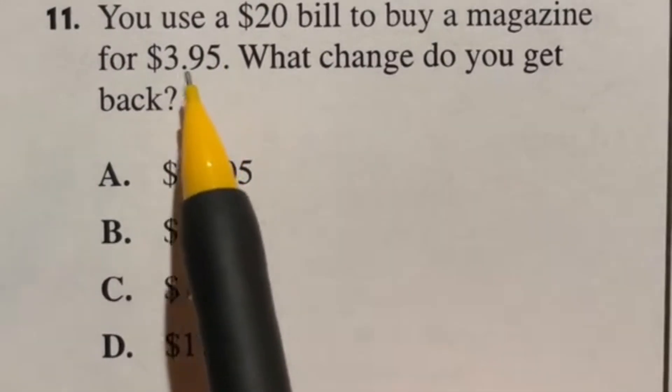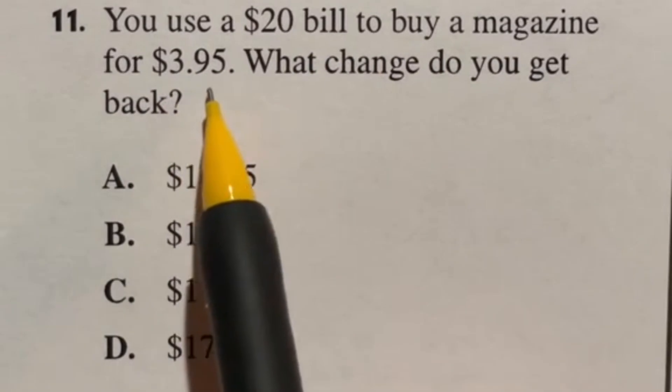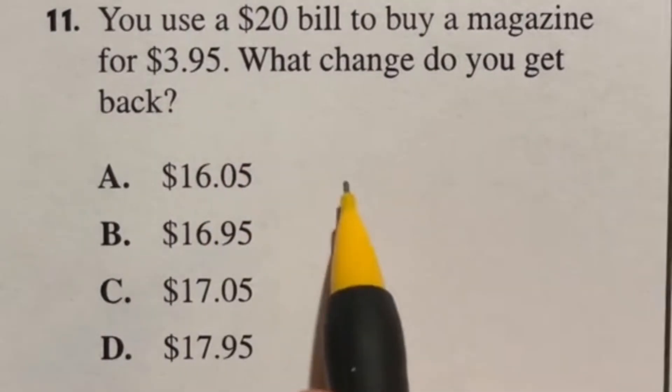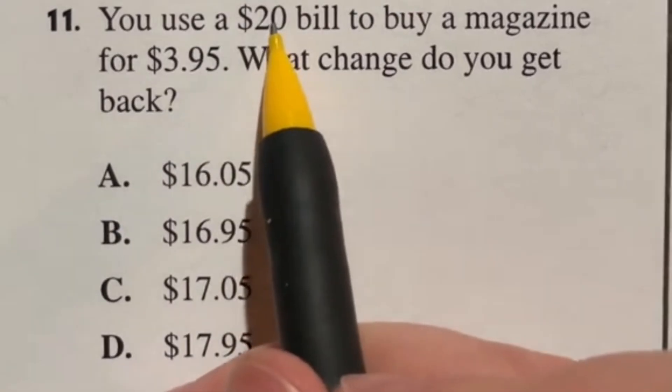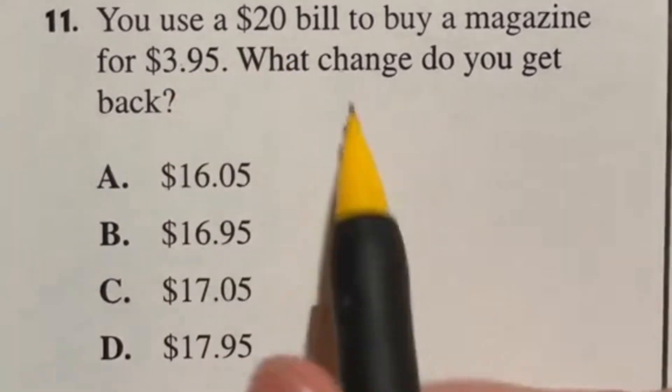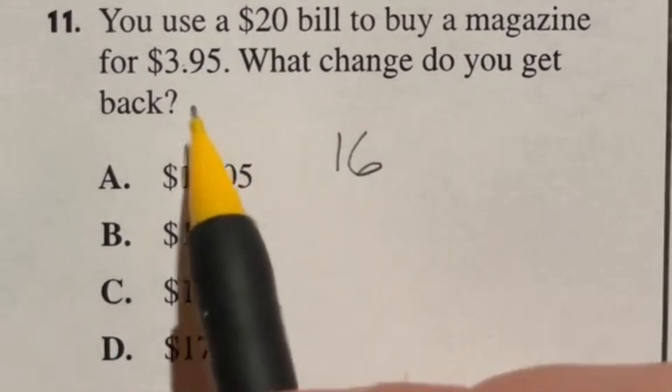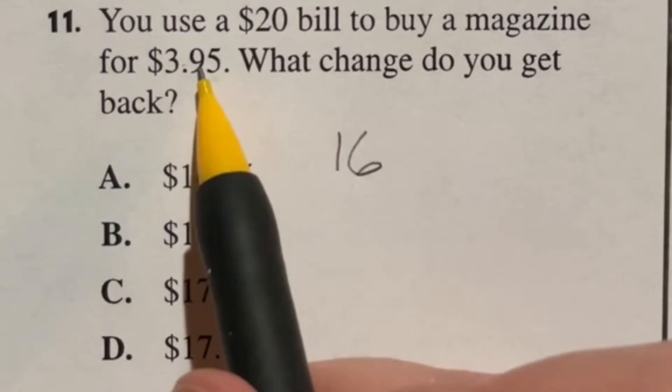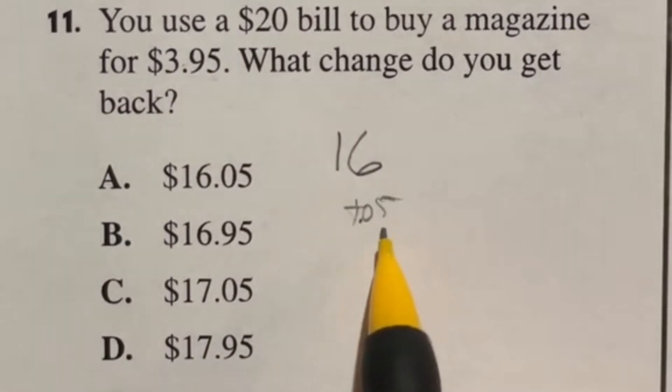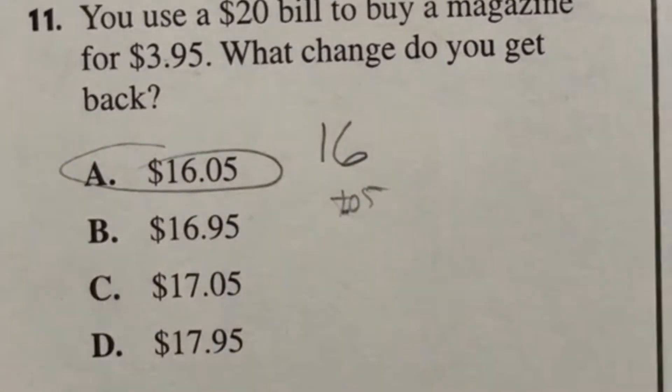This is a quick question. You shouldn't spend more than a few seconds on it. You use a $20 bill to buy a magazine for $3.95. What change do you get back? We're just doing 20 minus that $3.95. Well, that's five cents off of $4. So 20 minus $4 would give me 16 back. But remember, it was not $4, it was $3.95. So that means we still have that extra five cents, .05, that would be added back to there. So we're looking at a final answer here of A, $16.05.